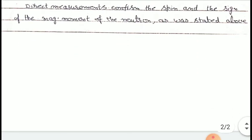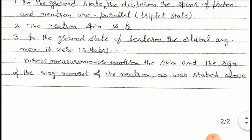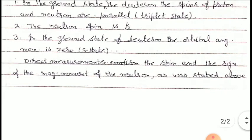Direct measurements confirm the spin and the sign of the magnetic moments of the neutron as stated above. This completes our study of the deuteron problem, or the study of the bound state of two nucleons. Thank you.